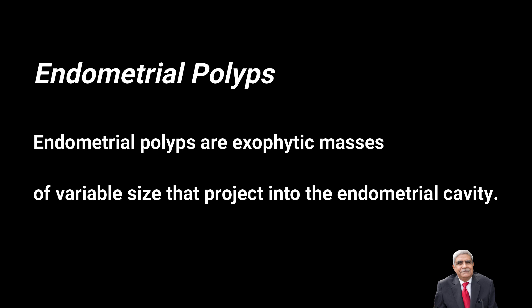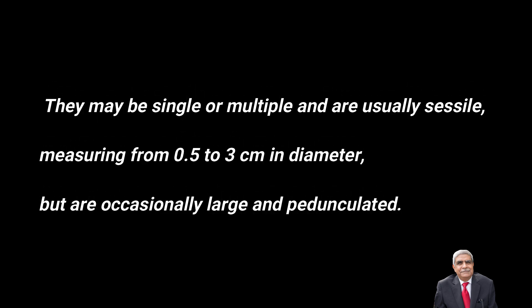Now we are going to discuss endometrial polyps. Endometrial polyps are exophytic masses which vary in size and they project into the endometrial cavity. They may be single or multiple and are usually sessile, but when they are of larger size they are pedunculated. They range from 0.5 to 3 cm in diameter.